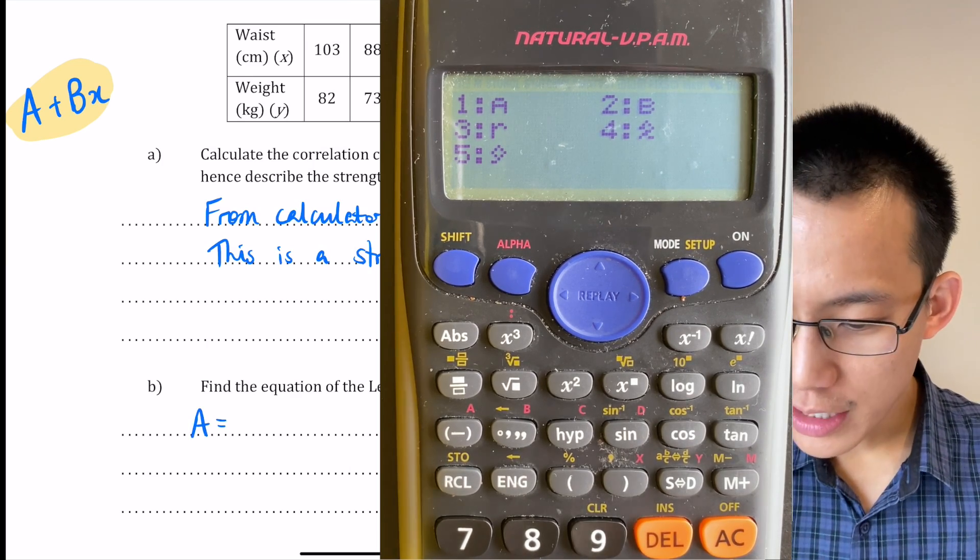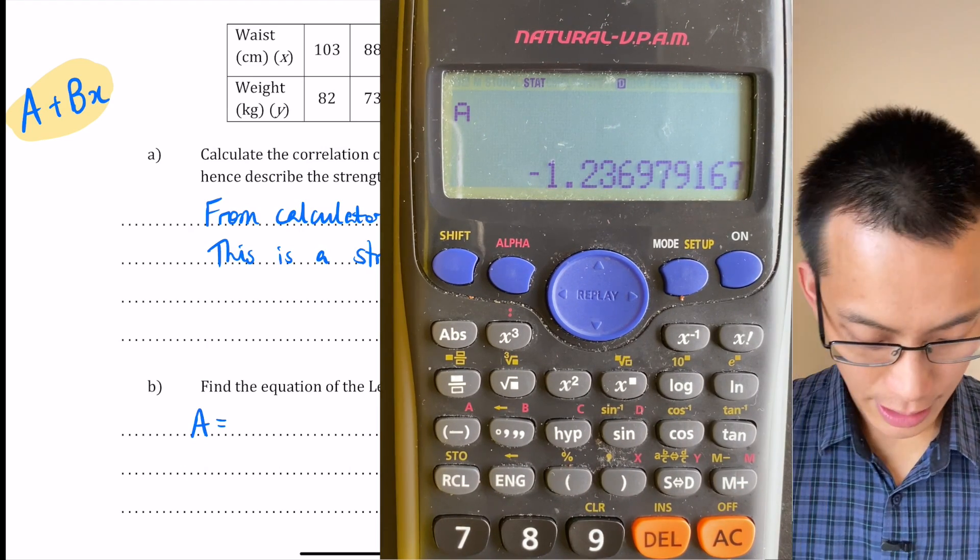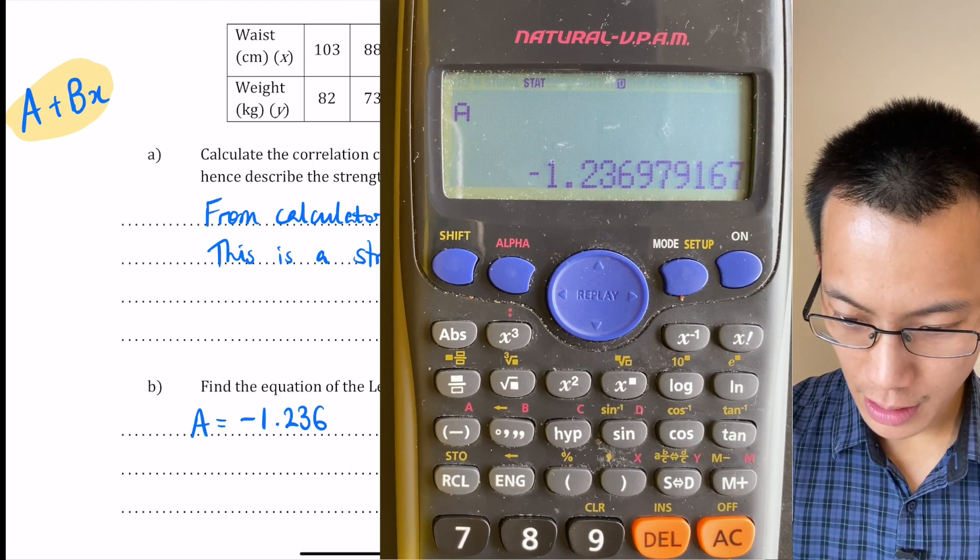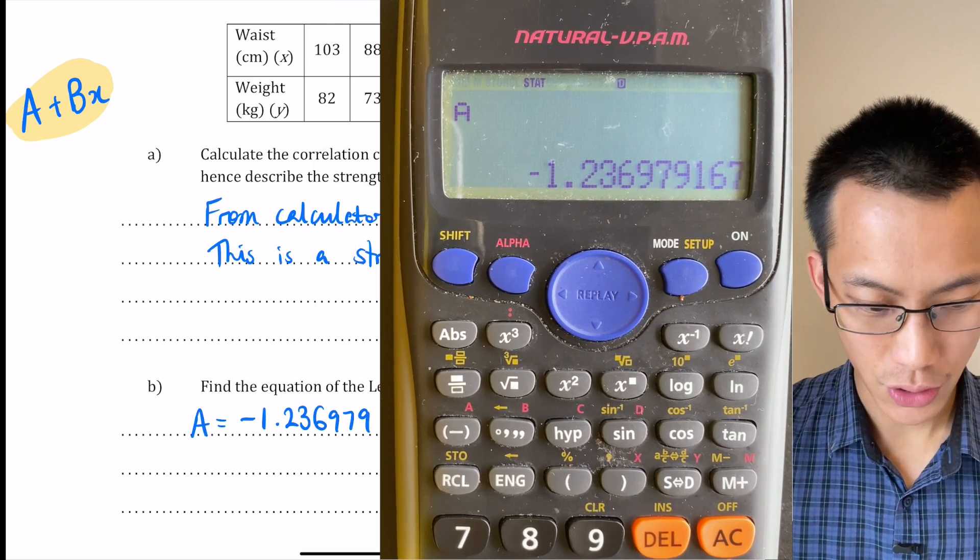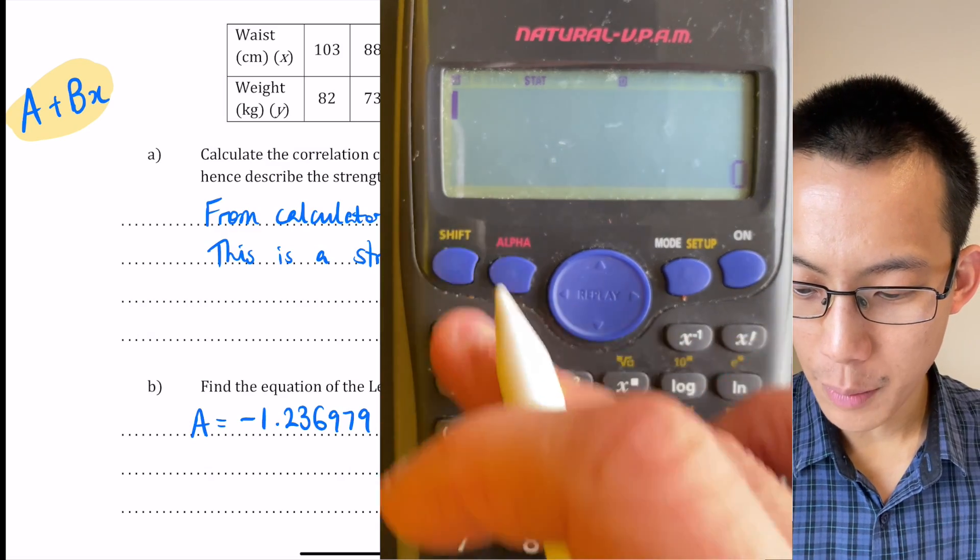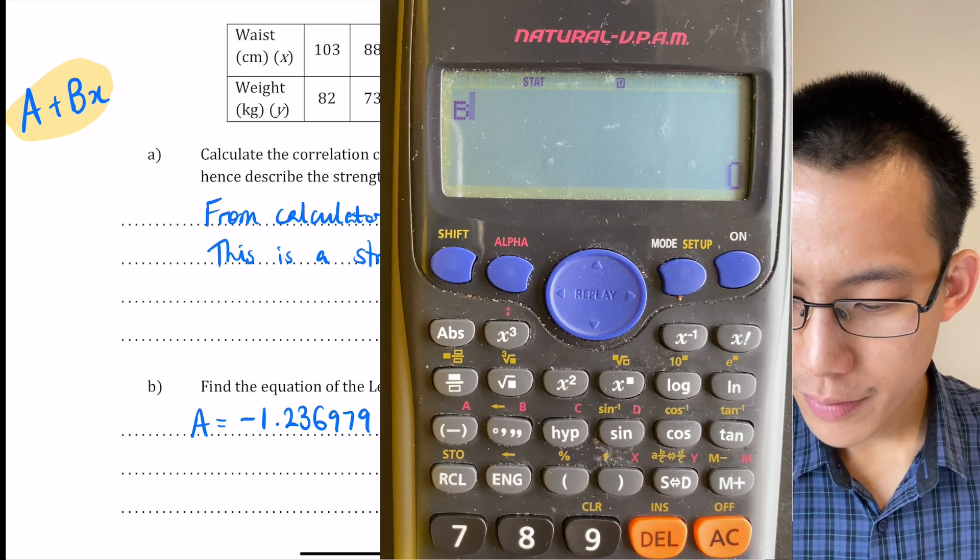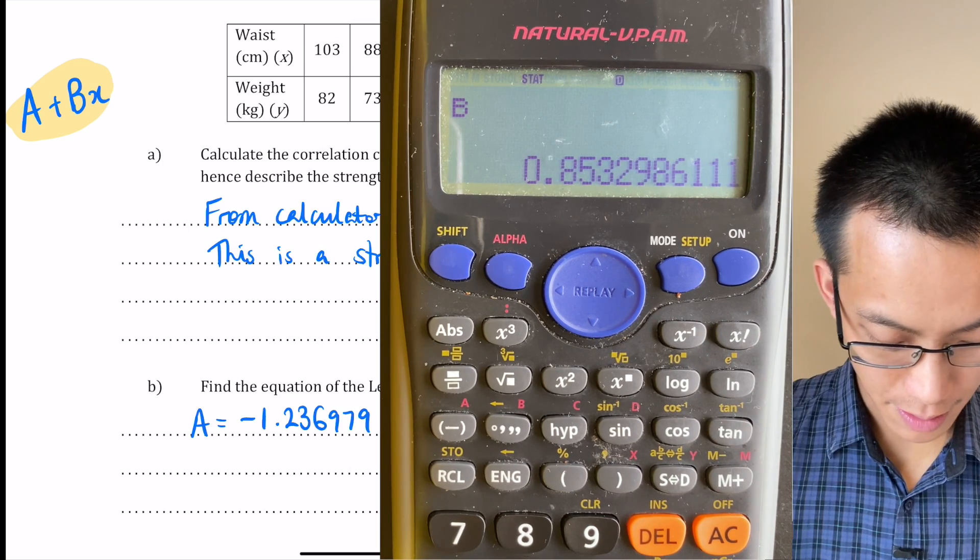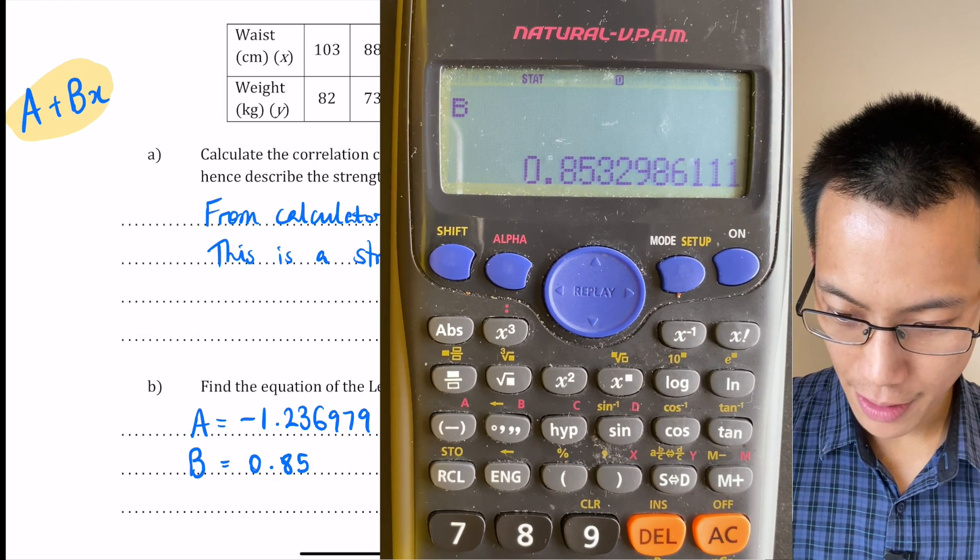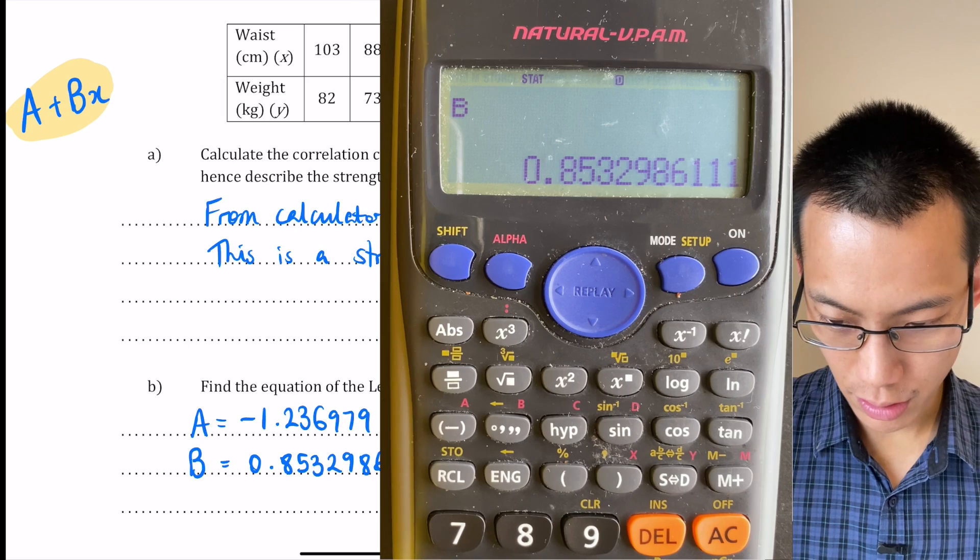A is going to be, let's have a look here, it's going to be 1, press equals there. So that gives me negative 1.236979. And then I'm going to clear that and I'm going to do the same thing and I'm going to ask for B. So there's 2 equals that. So that's B. So that gives me 0.8532986. Okay.